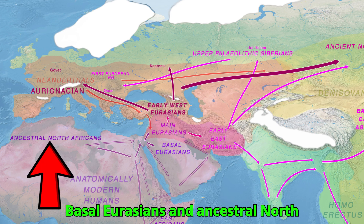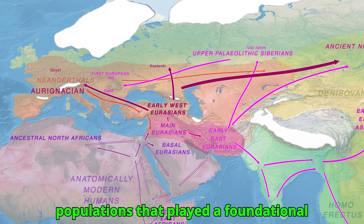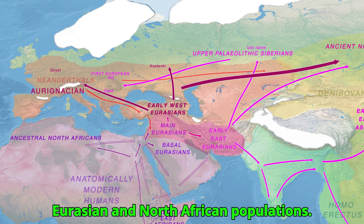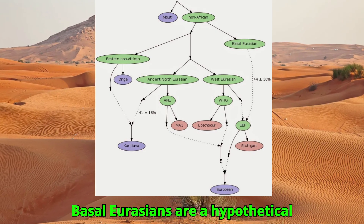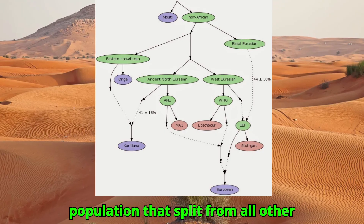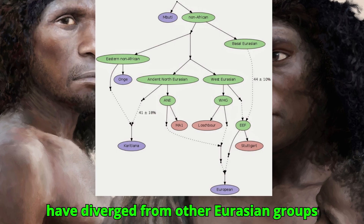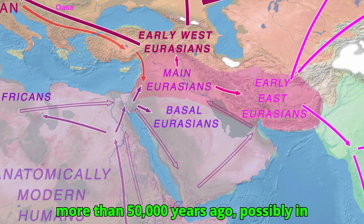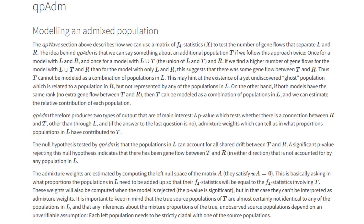Basal Eurasians and Ancestral North Africans (ANA) are two deeply divergent populations that played a foundational role in the genetic makeup of West Eurasian and North African populations. Basal Eurasians are a hypothetical population that split from all other non-Africans before they mixed with Neanderthals. This lineage is thought to have diverged from other Eurasian groups more than 50,000 years ago, possibly in or near the Near East or North Africa.